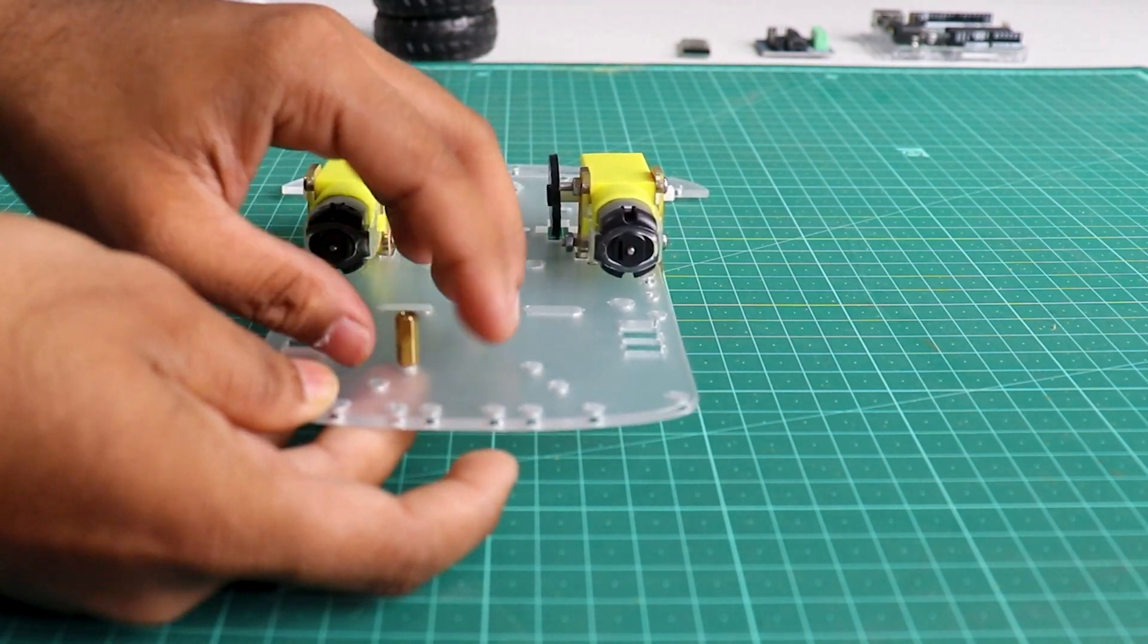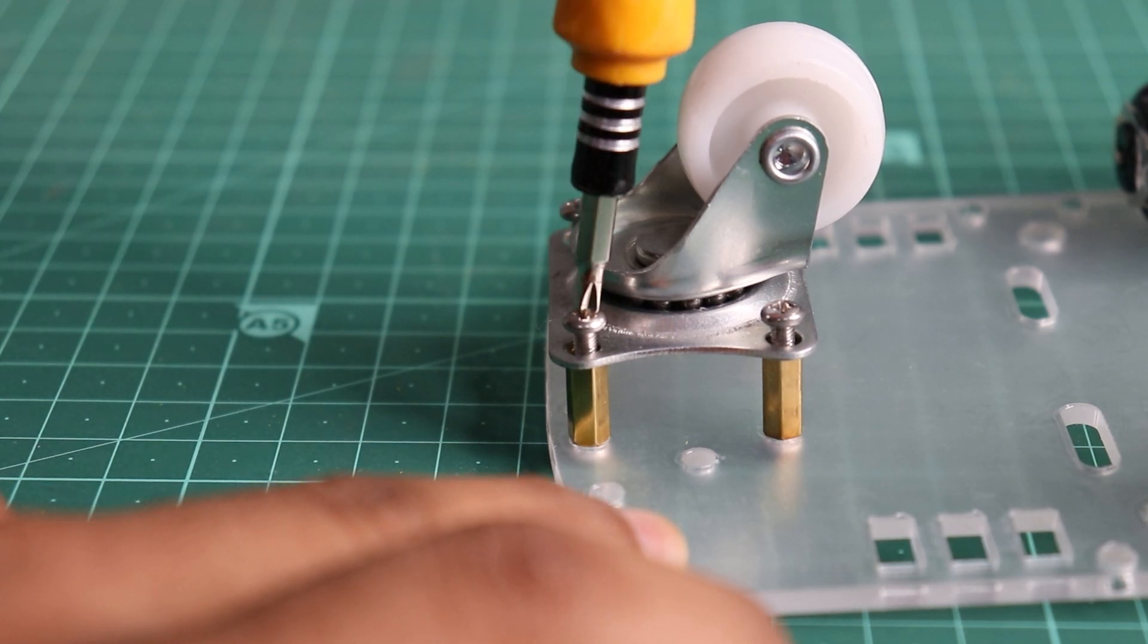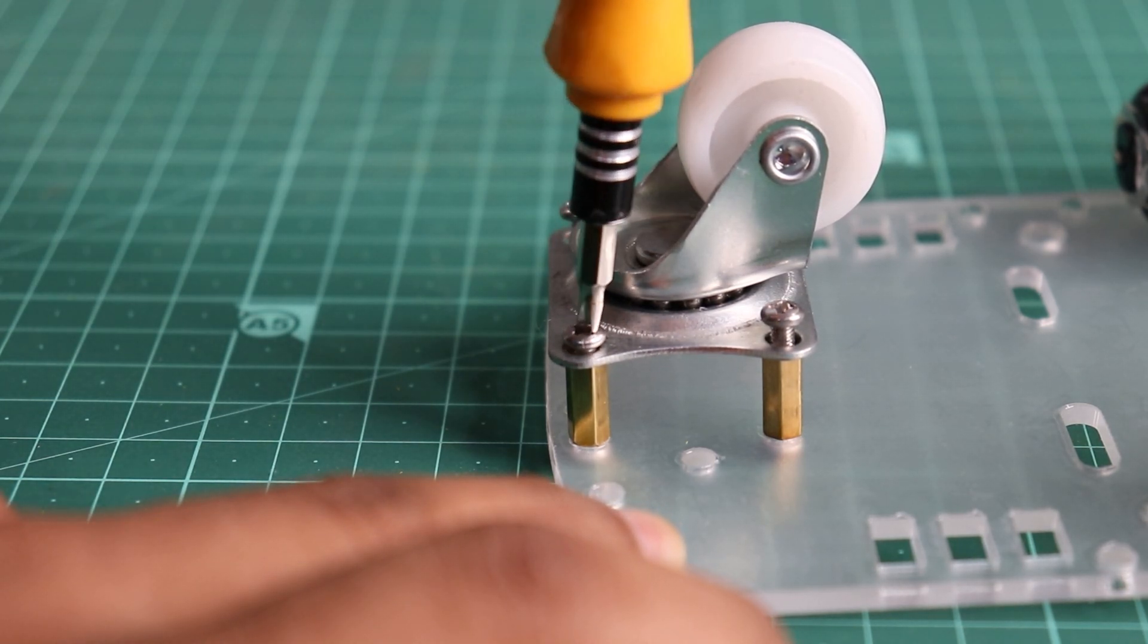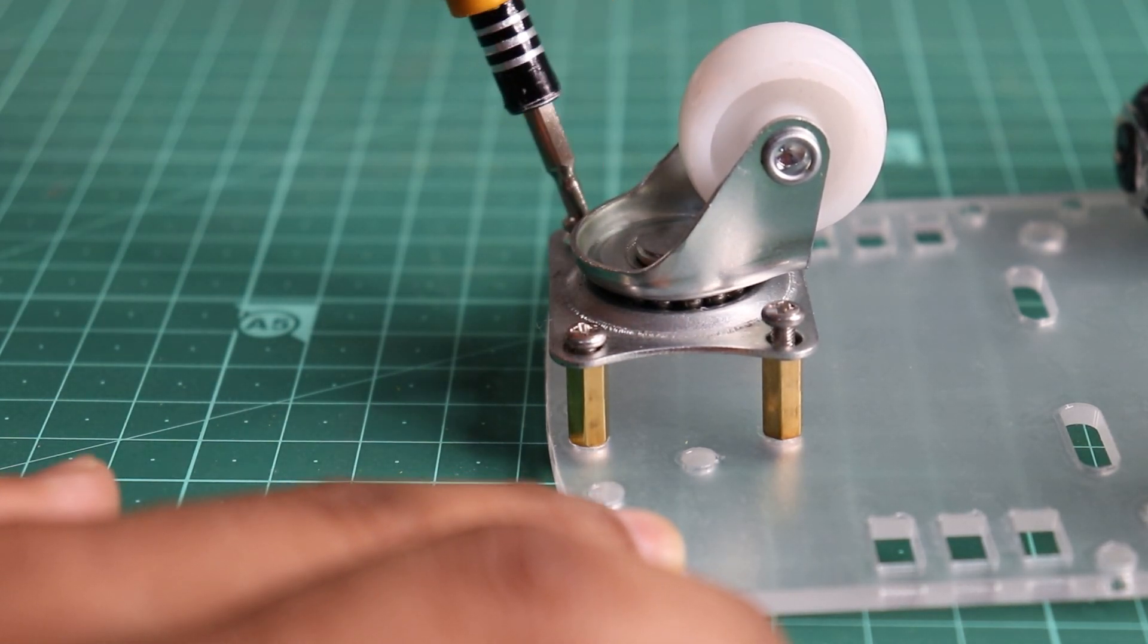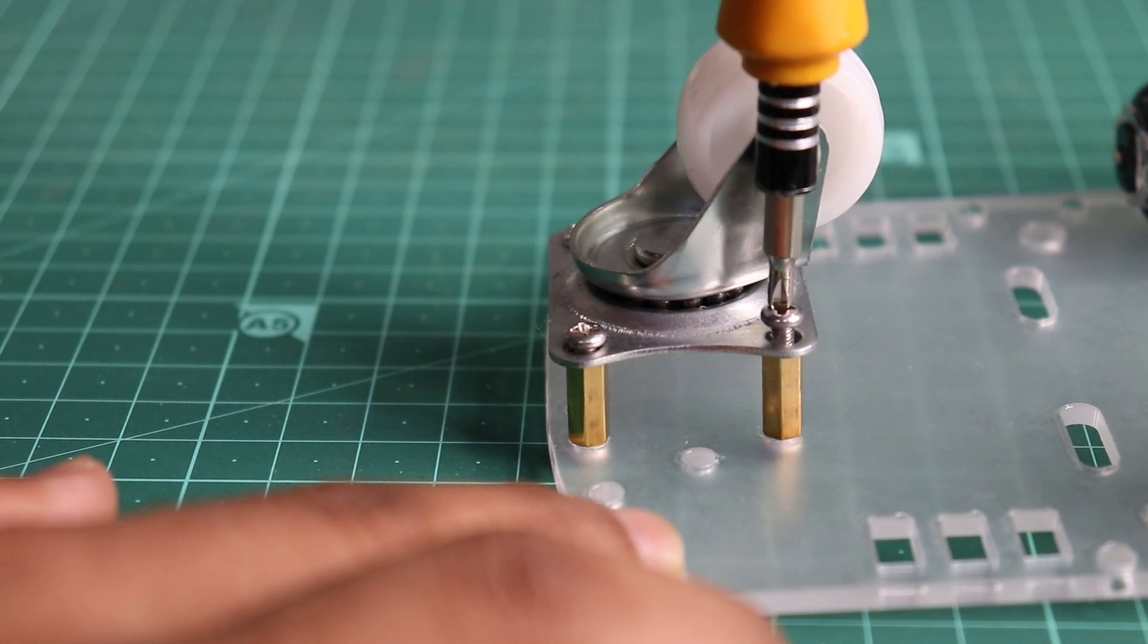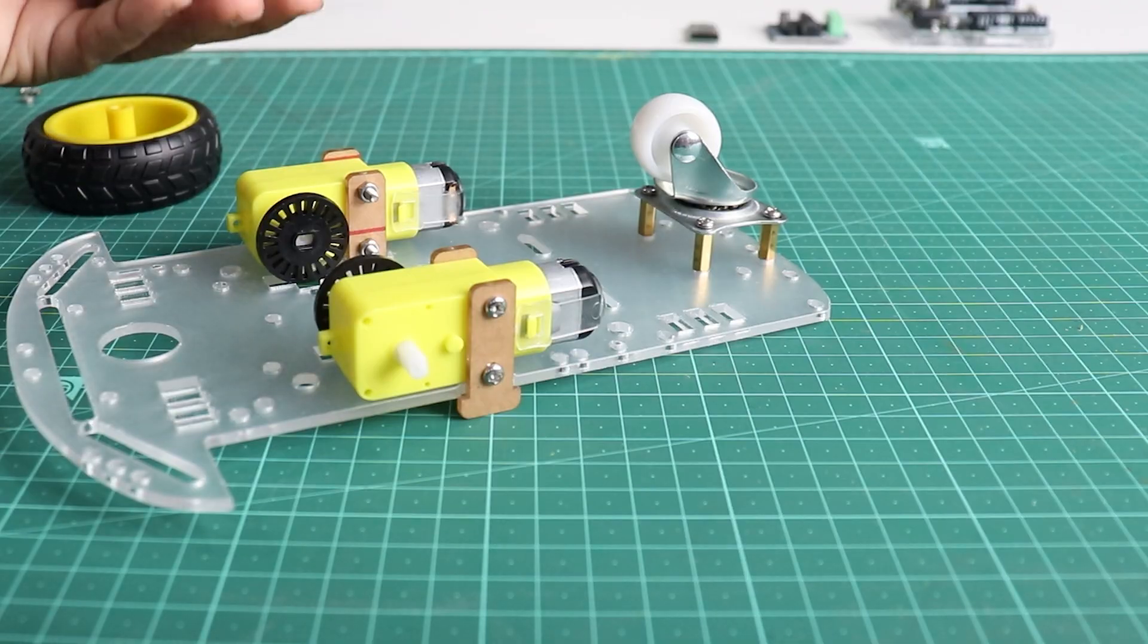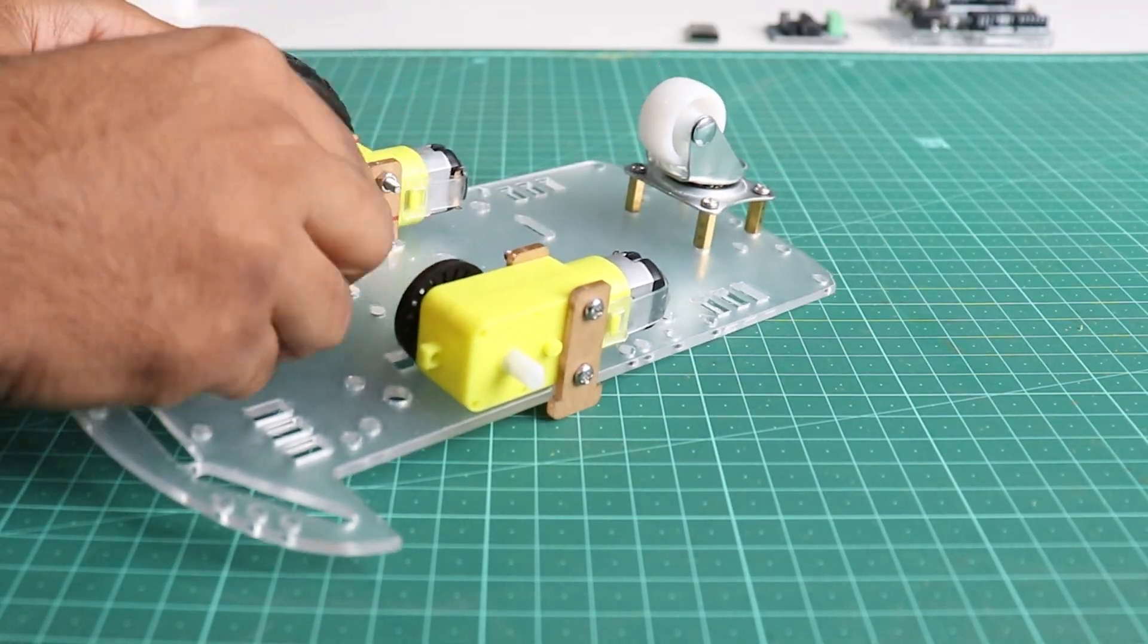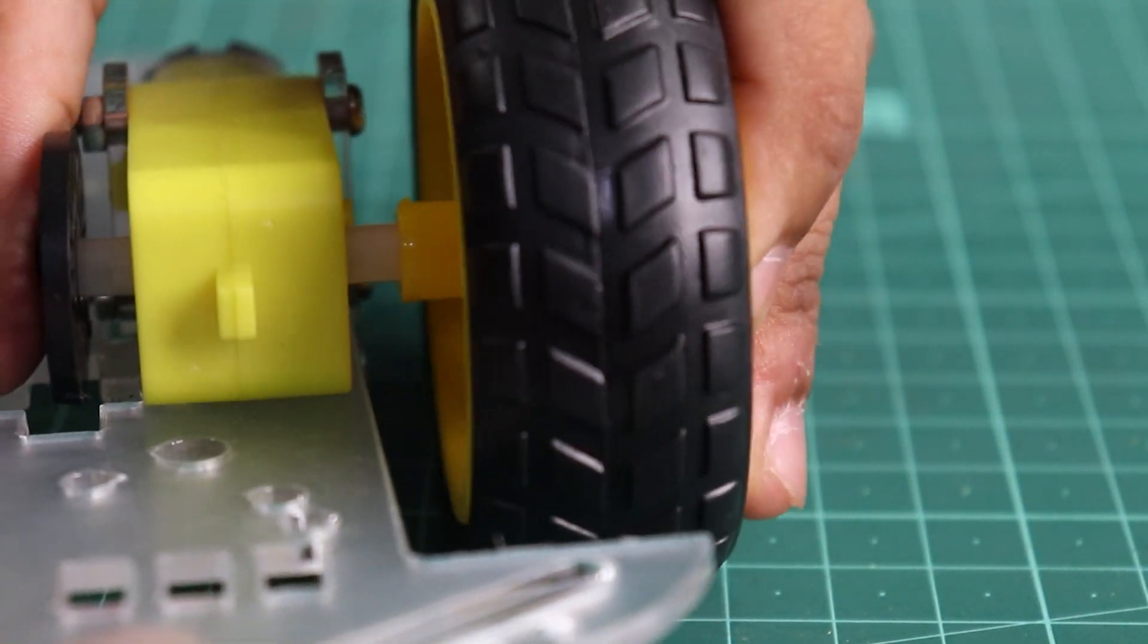All right everyone, after connecting the back motors, connect the front wheels using screws and bolts. Attach the back wheels to the motors and chassis frame is ready.